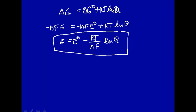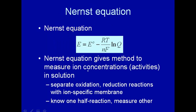It just comes from what we derived before, only now substituting what G is, another manifestation of G electrocell potential. And so the Nernst equation gives you a method to measure ion concentration activities in solution.